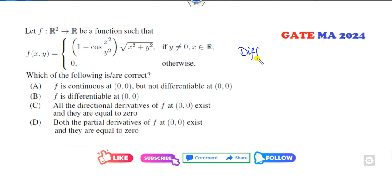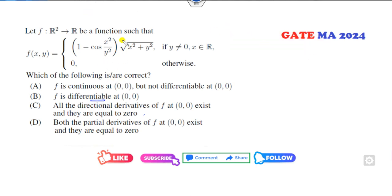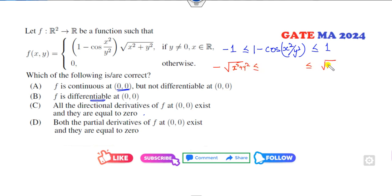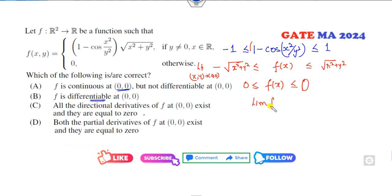First of all, we know that if you prove the function is differentiable, it means all directional derivatives exist. But let's check whether the function is continuous at (0,0). We know cos(1/r) is a bounded function lying between -1 and +1. Multiplying both sides by (x² + y²), and taking the limit as (x,y) → (0,0), the limit of f(x,y) equals 0, which equals f(0,0). So the function f is continuous.